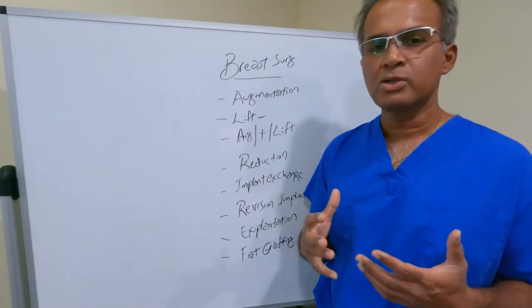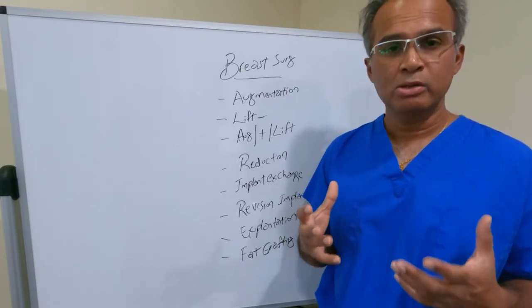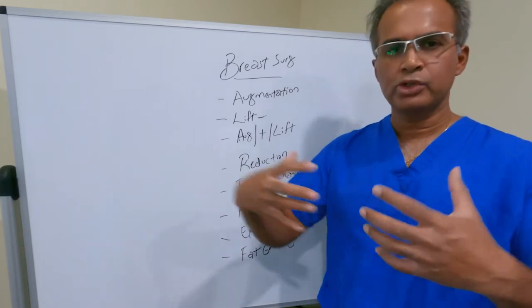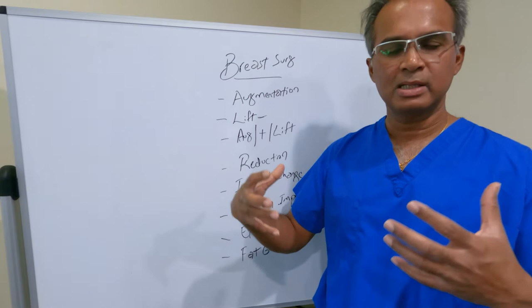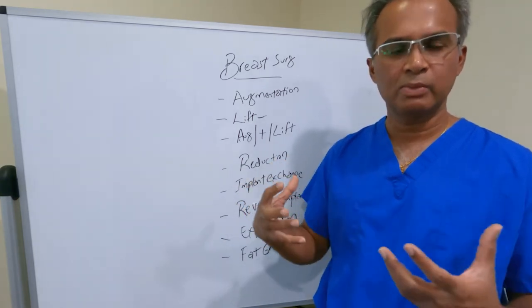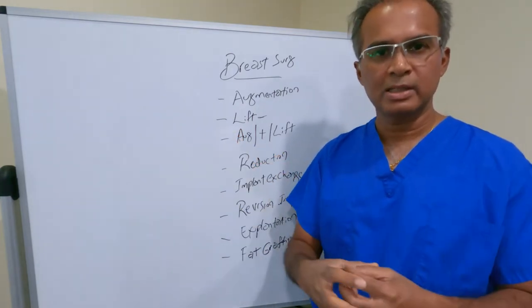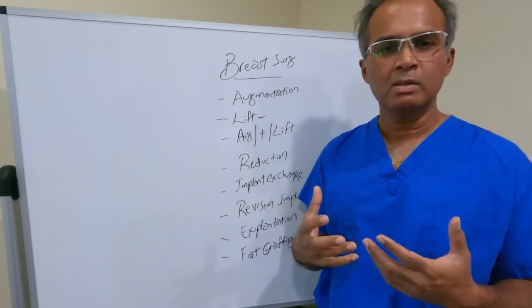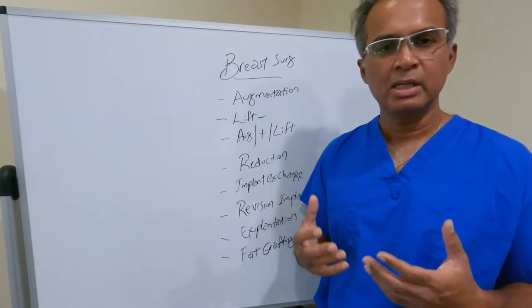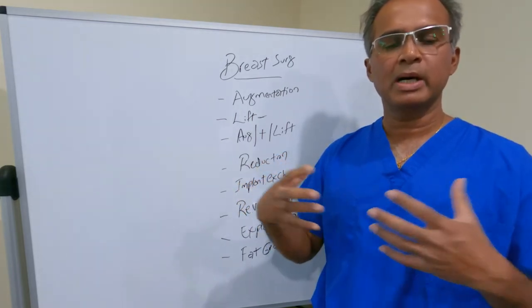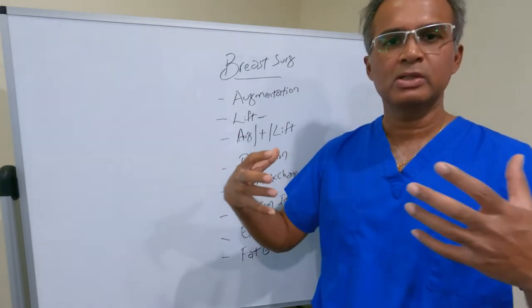Augmentation plus lift is an operation that tries to accomplish two contradictory things. The augmentation portion is really to push everything out, to take up all of the loose skin and stretch things out. You're essentially expanding the tissues or taking up loose skin by filling it up with an implant. The lift however is the opposite - you are removing skin and shrinking it.